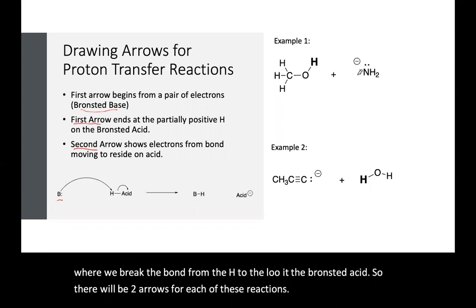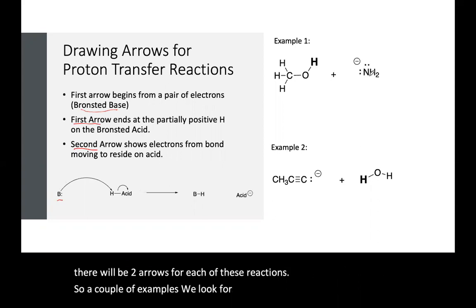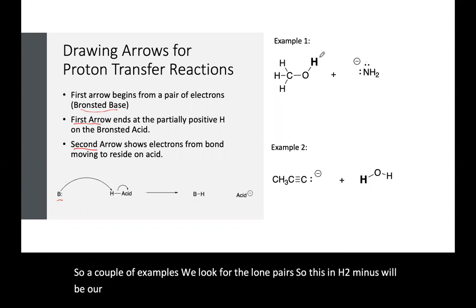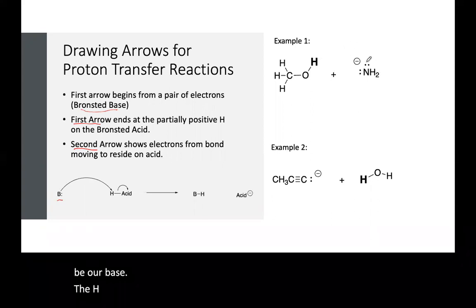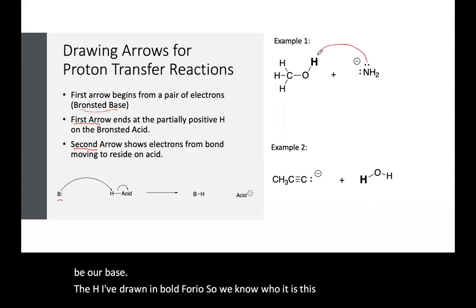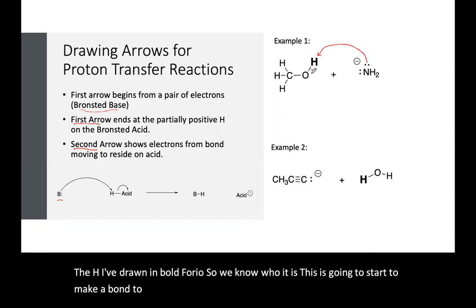So a couple of examples, we look for the lone pair. So this NH2 minus will be our base. The H I've drawn in bold for you, so we know who it is. This is going to start to make a bond to that H, and we break the bond from the oxygen to the hydrogen.